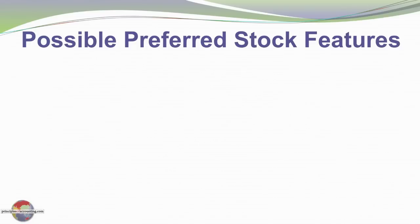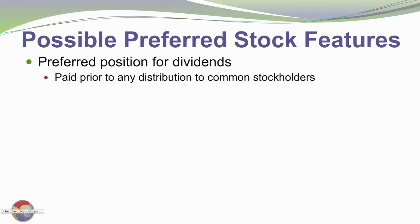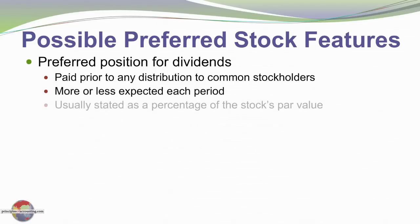In addition to multiple classes of common stock, a company may issue preferred stock. It's called preferred because it has a preference in dividends — its dividends are paid before the common shareholders get their distributions, and dividends are more or less expected each period. A preferred stock usually has a par value that's significant, and the dividend rate is stated as a percentage of par. For example, it may be 10% preferred stock, so 10% of par value would be the dividend.